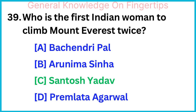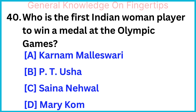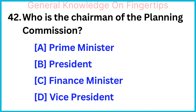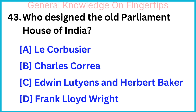Who is the first Indian woman player to win a medal at the Olympic Games? Karnam Malleswari. Who is the chairman of the National Development Council? Prime Minister. Who is the chairman of the Planning Commission? Prime Minister. Who designed the old Parliament House of India? Edwin Lutyens and Herbert Baker.